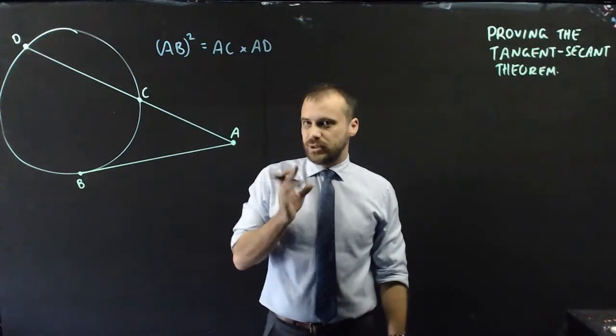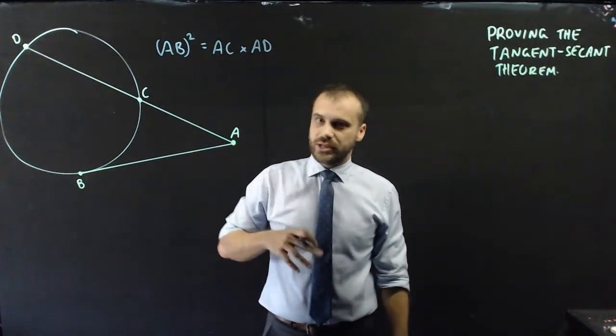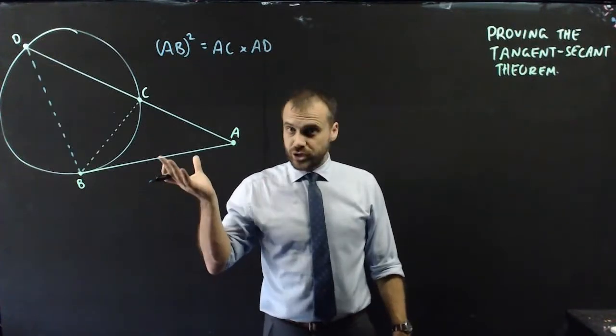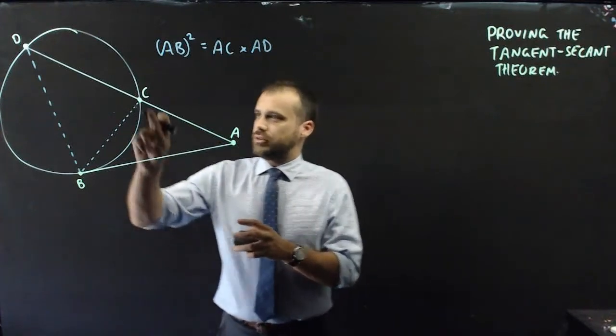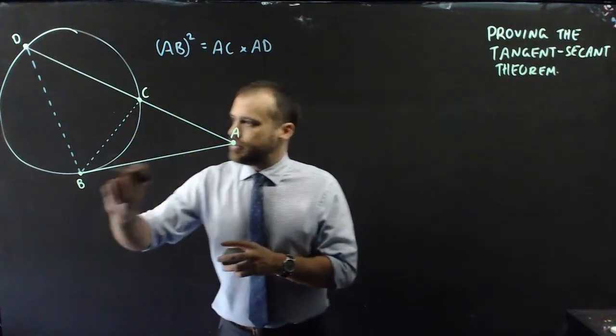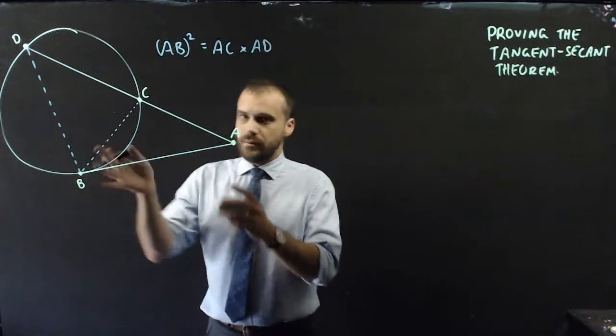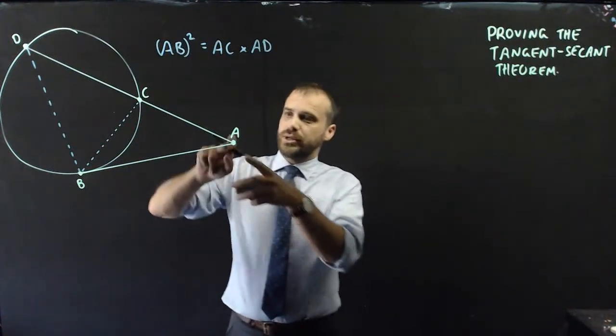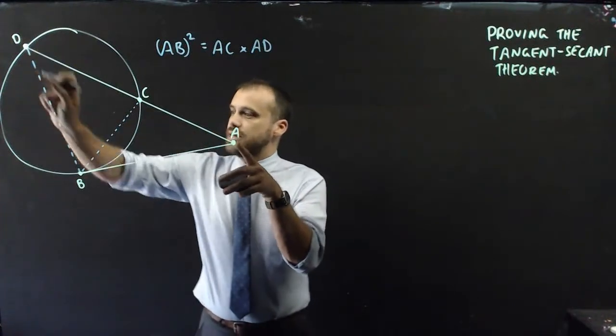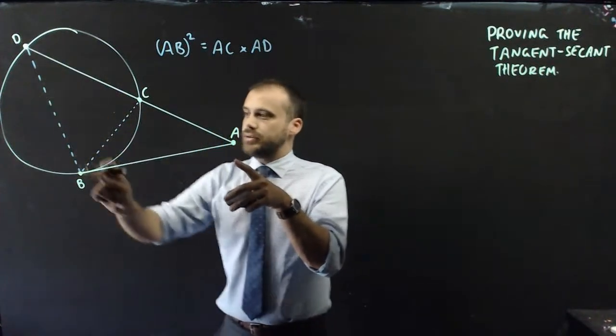We're going to prove it using similar triangles again, so I'm going to start by constructing a triangle—my bad—two triangles. The two triangles that I want you to keep in your head are triangle CAB, most of which is outside of the circle, and the other triangle we're going to talk about is ADB, the big one.